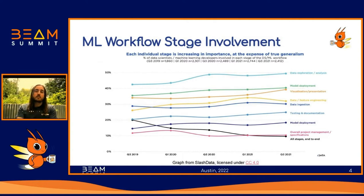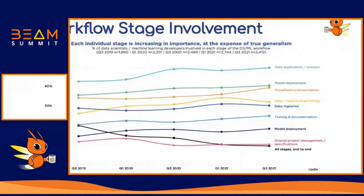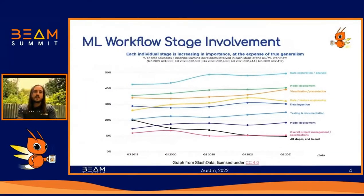Since these developers prefer to work in Python, it's great to have Beam's portability framework to simplify integration of Python with data processing. To better understand ongoing trends between data processing and ML, here's a graph from Slashdata showing the percentage growth in data science and ML developers involved in data exploration and analysis work versus other ML workflow stages. While data processing was the most common stage for them to be involved in for the past two years, we've seen a 10% growth over this time.